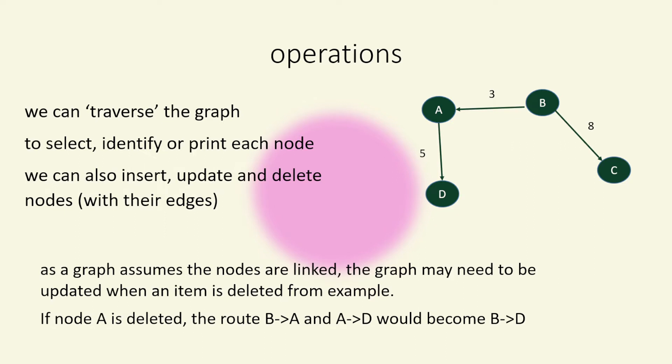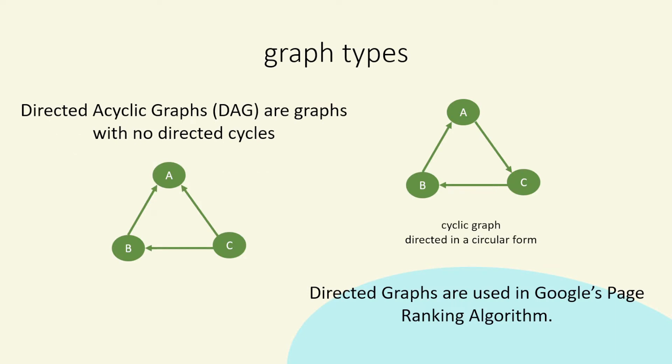So for example here, if we deleted the node A, then we still need some type of link from B to D. So maybe we would connect B directly to D with a directed arrow and that would have a cost.